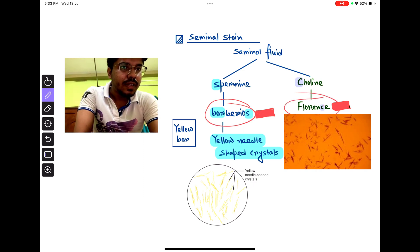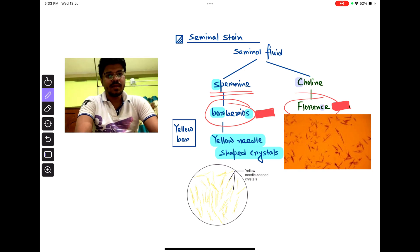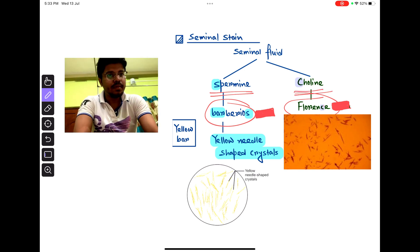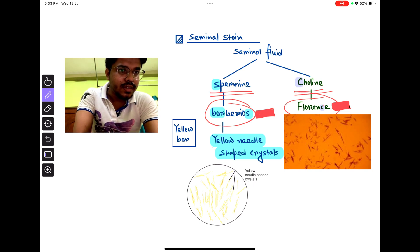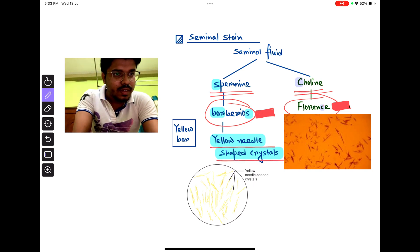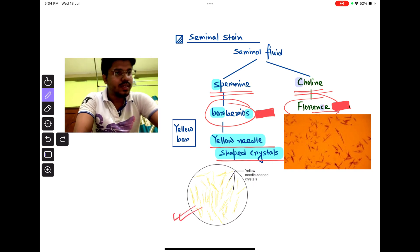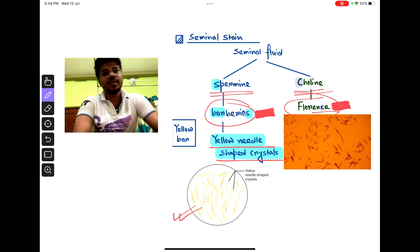In Barbaryose test, Sparmin is examined. In Florence test, Colline is examined. In Barbaryose test, there is yellow needle shaped crystal. In Florence test, there is brown rhombic shaped crystal.